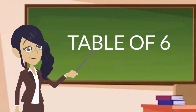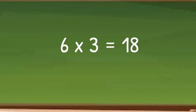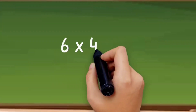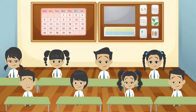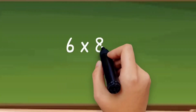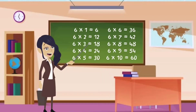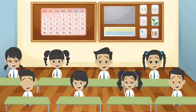Let's learn table of 6. 6 ones are 6. 6 twos are 12. 6 threes are 18. 6 fours are 24. 6 fives are 30. 6 sixes are 36. 6 sevens are 42. 6 eights are 48. 6 nines are 54. 6 tens are 60.